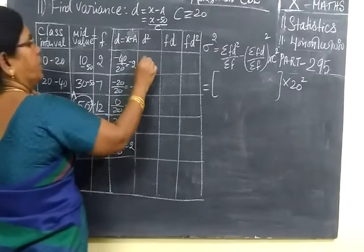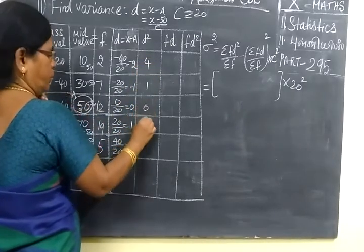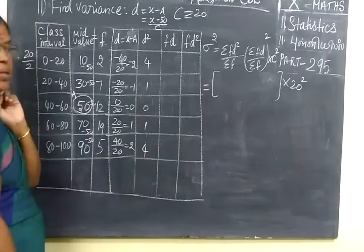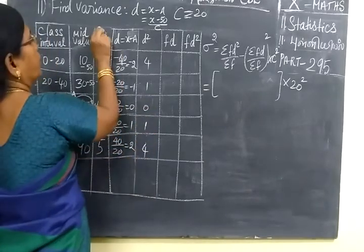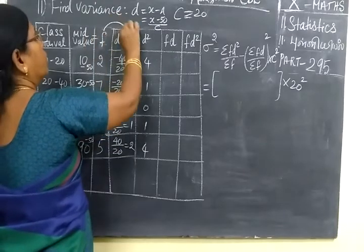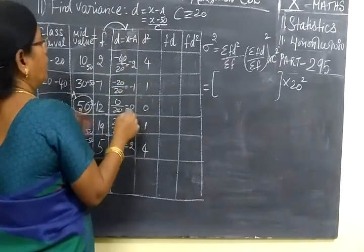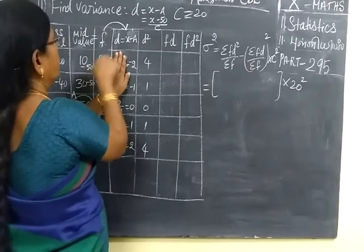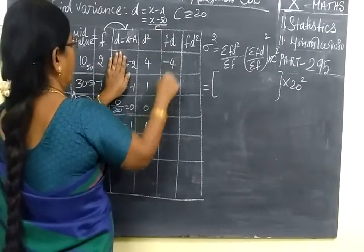Now find d square. 4, 1, 0, 1, 4. Now, simpler number that is. Now f into d. So f into d, f into d, it will multiply. So minus 4.